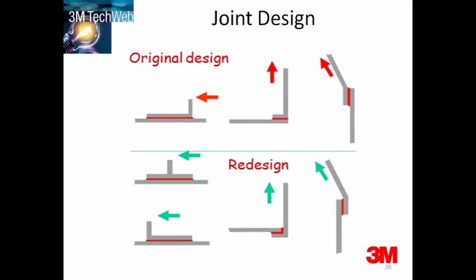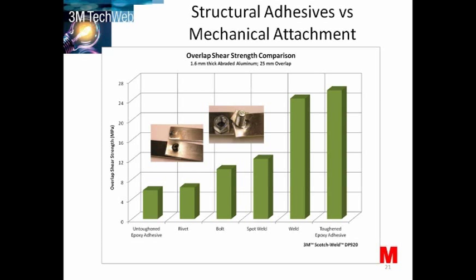These joints could effectively be redesigned with some very simple changes, actually converting the forces into the more acceptable tensile, compression, and shear. In the bottom right-hand example, with a clever and very simple redesign, it is actually now using the strength of the substrate as part of the joint — which is the kind of trick you should look for when designing your product. If you get your surface preparation right and match the right adhesive to the substrates, you can get very good performance with adhesives.